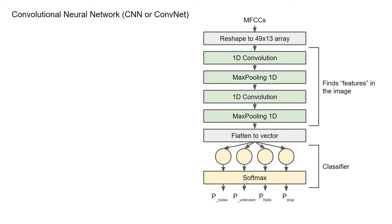Previously, we saw how a basic fully connected neural network can be used to classify motions. Neural networks come in all sorts of shapes and sizes. In this lecture, we'll explore a popular network used for image classification: the convolutional neural network, also known as a CNN or ConvNet. It consists of a series of operations that automatically find and pick out features or patterns in the input data. What makes it unique are its convolution layers, which contain filters whose parameters are updated using backpropagation, just like regular neural network nodes.